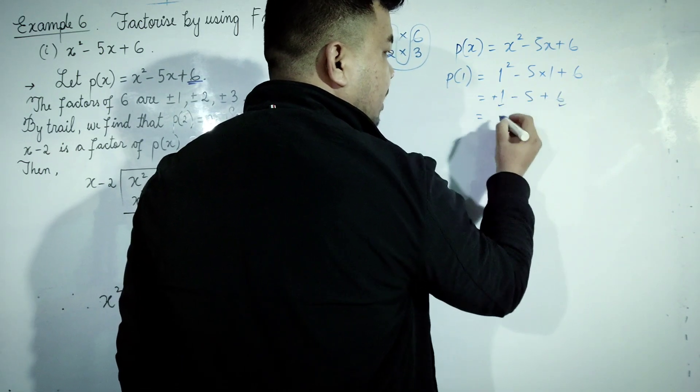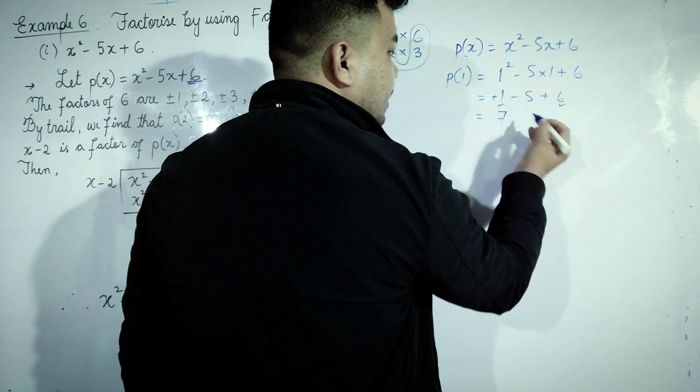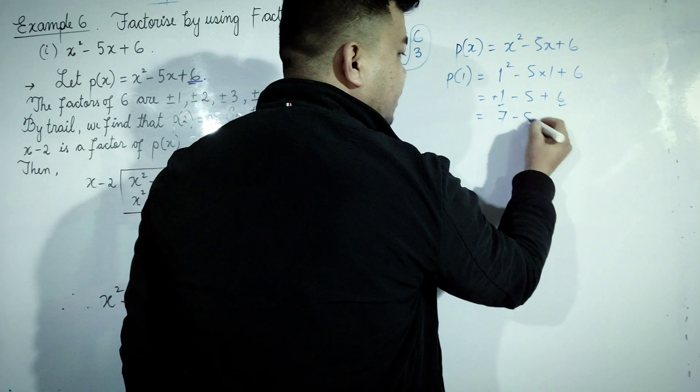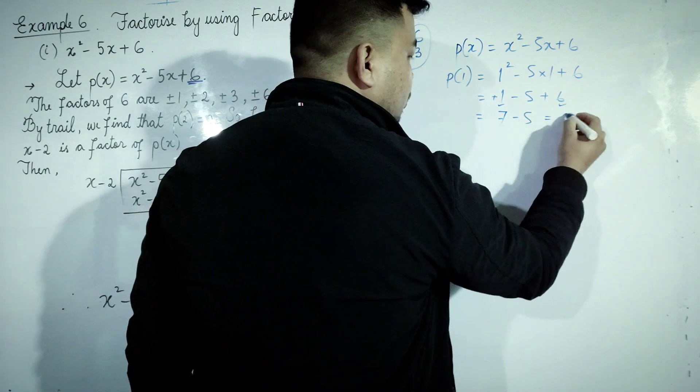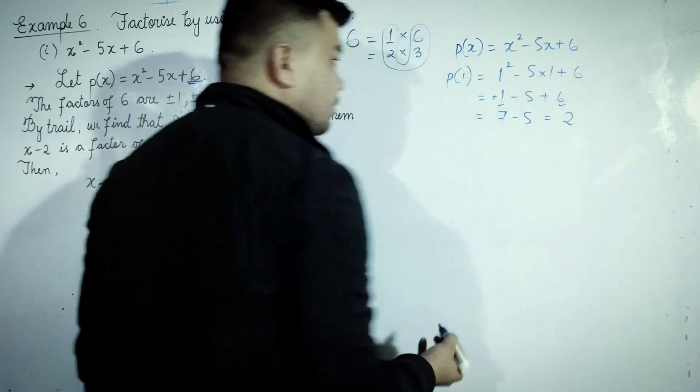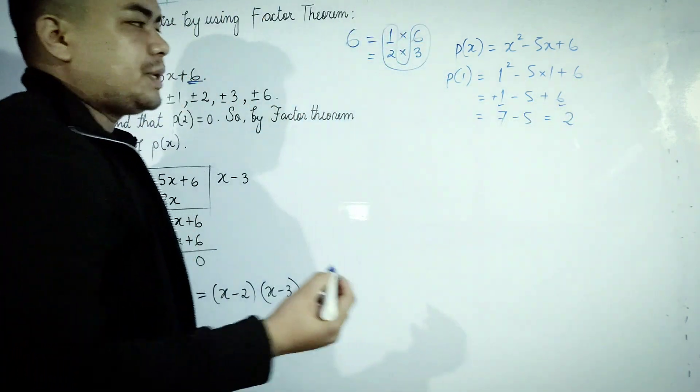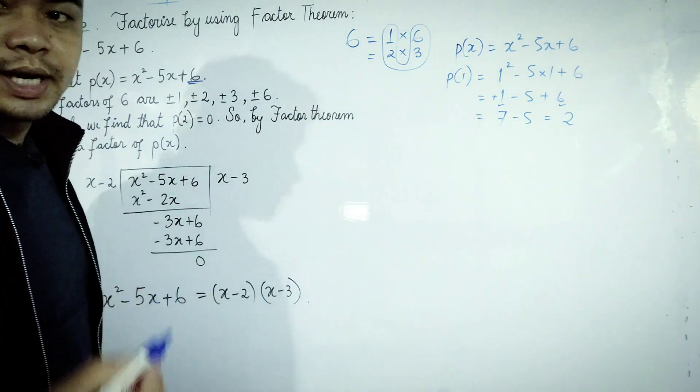We get 1 - 5 + 6. So 6 minus 5 is equal to 2. We have P(1) = 2.